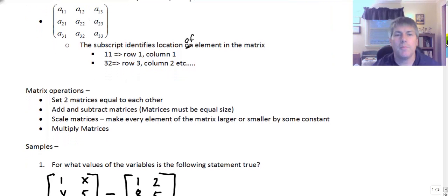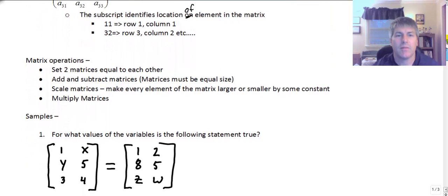We can do some matrix operations. Some different things we can do with matrices. We can set two matrices equal to each other. We can add and subtract matrices. Matrices must be the same size if we're going to do that. We can scale matrices or make every element of the matrix larger or smaller by some constant. We'll do some of that. That's kind of the distributive property. And we can multiply matrices.